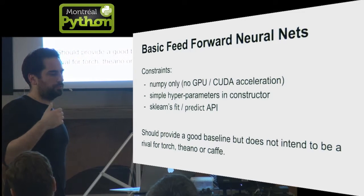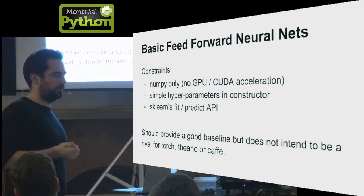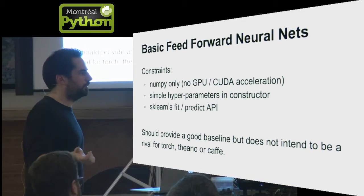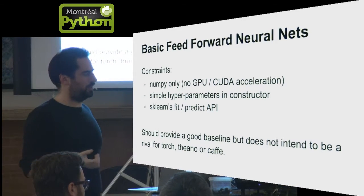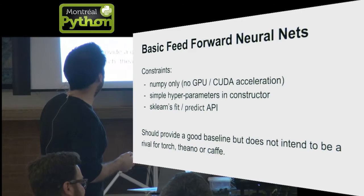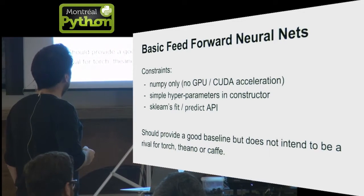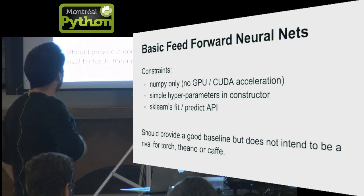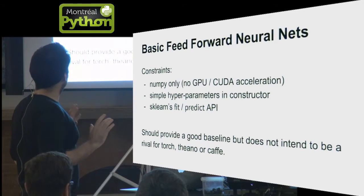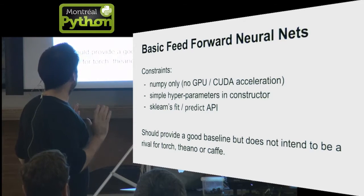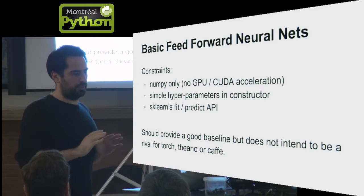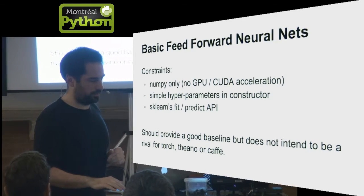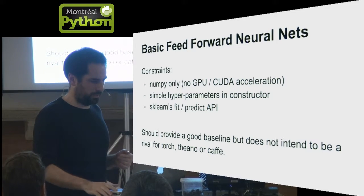But if you really just want to benchmark a baseline linear model on your data and compare it to a random forest, just to know whether or not neural nets could be promising or not on your data, then this implementation might be enough. We have a simple hyperparameter set in the constructor and it follows the traditional fit-predict API of scikit-learn. So it's much easier to use than Theano or Torch or Caffe for instance.